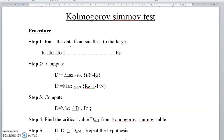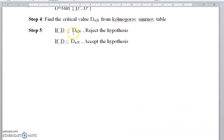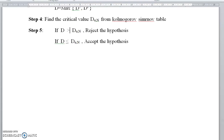Step 5 is to compare. If D is greater than D(α, n), reject the hypothesis. If D is less than or equal to D(α, n), accept the hypothesis. This is the procedure we have to follow in the Kolmogorov-Smirnov test.